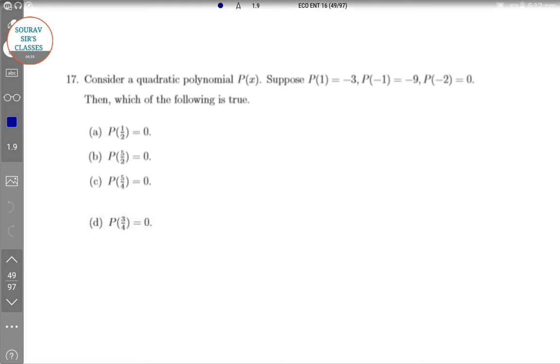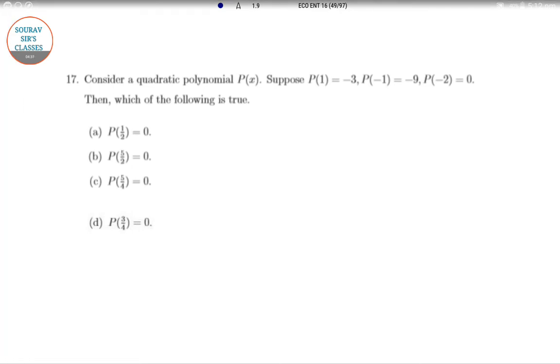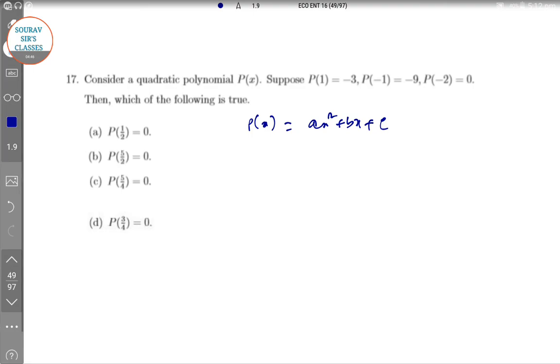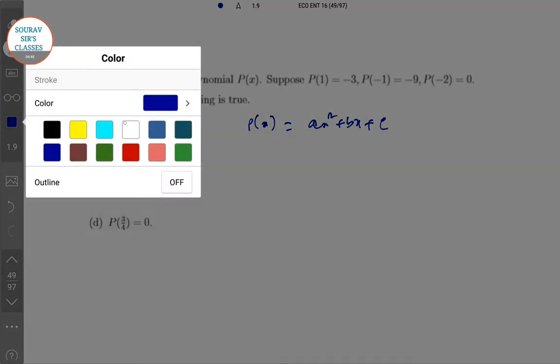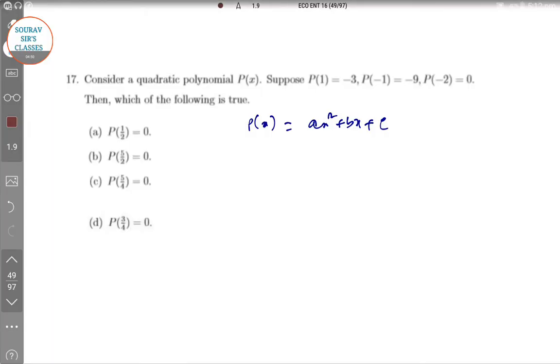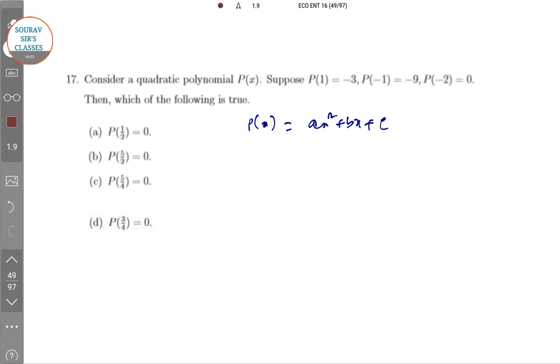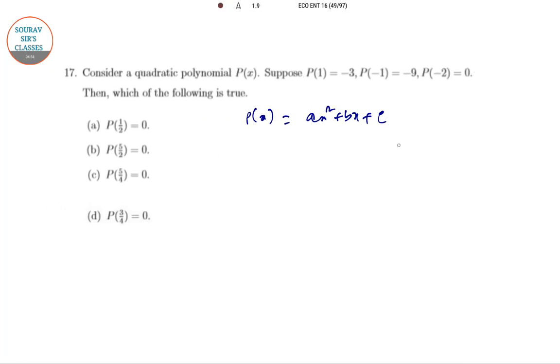Consider the quadratic polynomial P of x. Suppose that P of 1, so quadratic polynomial means P of x equal to, you can take it like ax squared plus bx plus c, most common quadratic form. And then we can proceed like this. There will be P of 1 equal to minus 3. So P of 1, remember that we need 3 equations in order to solve it, 3 unknowns, that is a, b, and c.